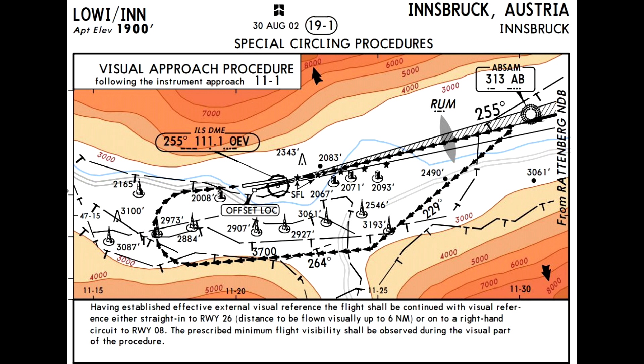Today we're going to do the Localizer DME approach to Runway 08 at Innsbruck. I've got a chart up here which is the visual approach procedure. What you really need to know is that you need to be at Ratzenberg, or RTT NDB, at 9500 feet, and you leave Ratzenberg on a heading of 210 degrees.